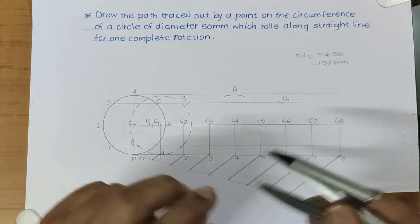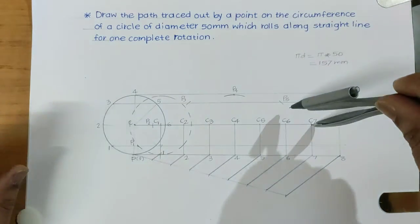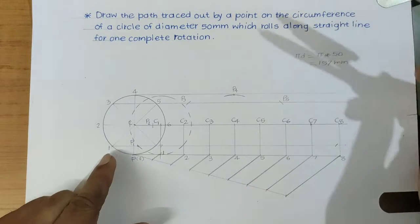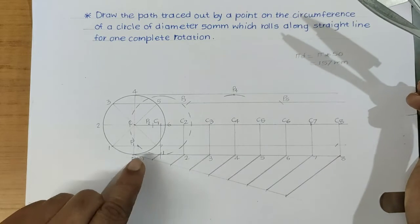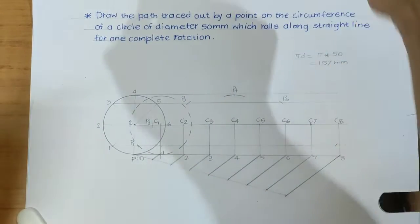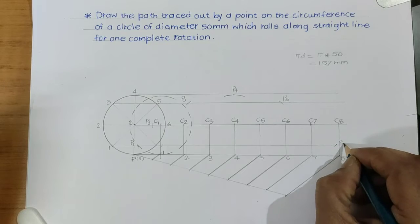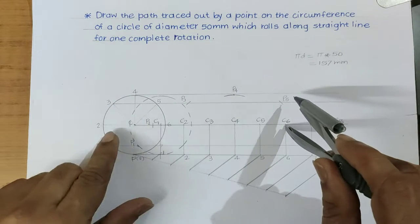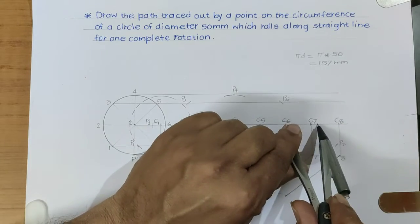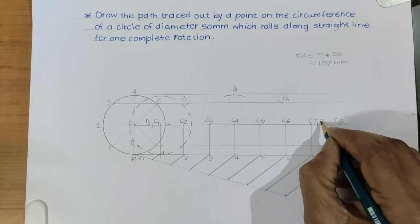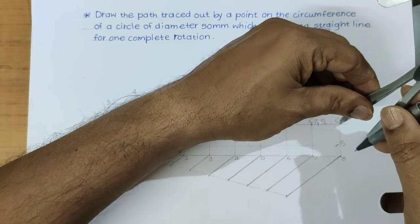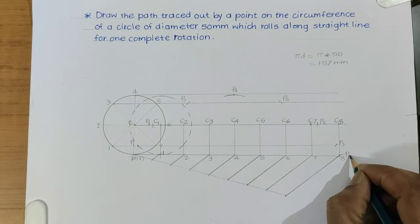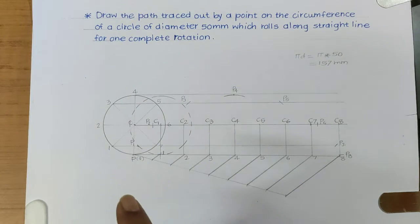When the circle center is at C7, the point lies on the line passing through 7. We get two points — P1 and P7 — on the same line. This is the position of P7. We also locate P6: when the center is at C6, P6 lies on the corresponding horizontal line. Finally, P8 is here after one complete rotation. Then draw a smooth curve passing through all these points.